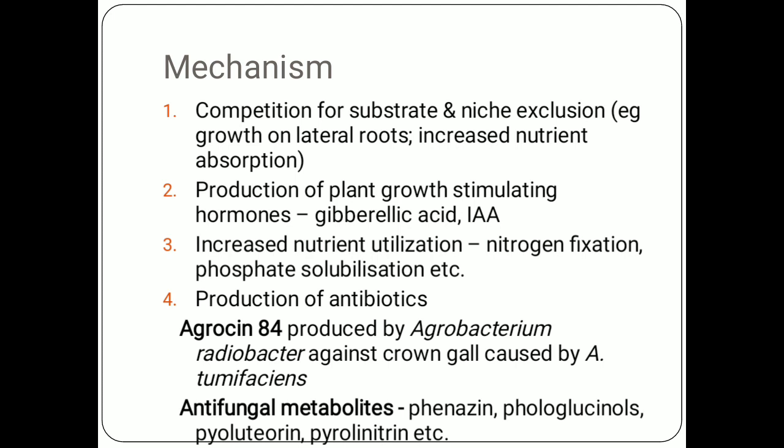Many PGPRs produce plant growth stimulating hormones like gibberellic acid or indoleacetic acid, which directly increase the growth of plants. Thirdly, they show increased nutrient utilization — PGPRs are able to fix nitrogen or solubilize inorganic phosphates in the soil. Whatever they fix or solubilize is provided to the plant, enabling better uptake and effective utilization of nutrients, resulting in better plant growth.